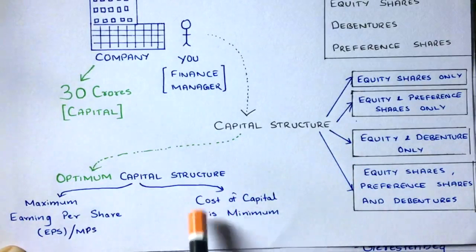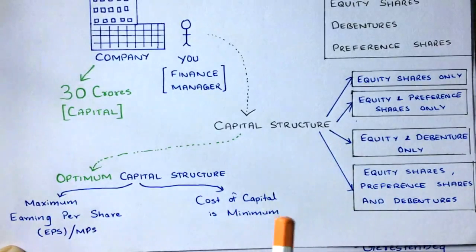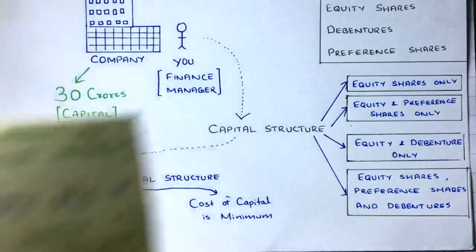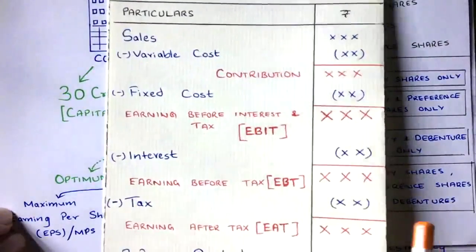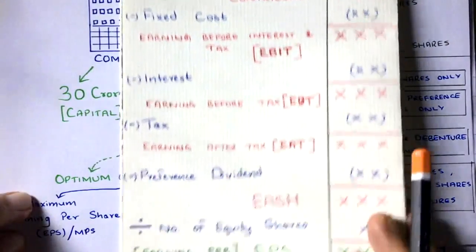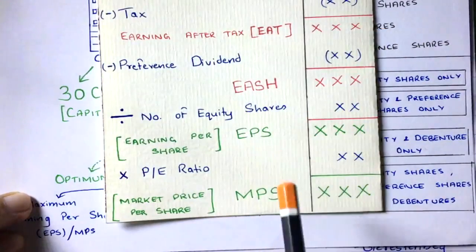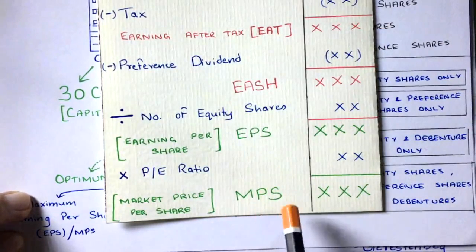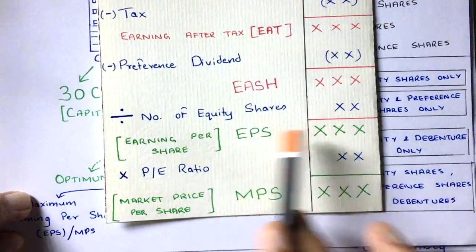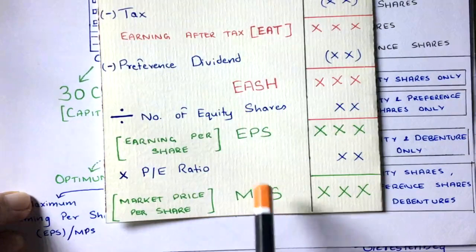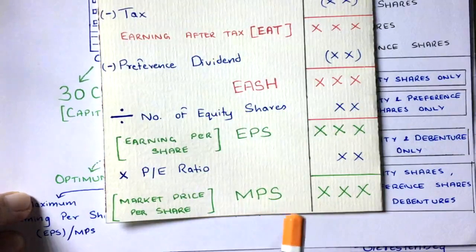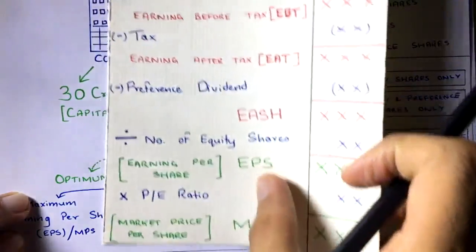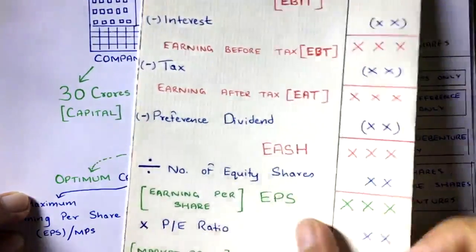The cost of capital analysis will be covered in the cost of capital chapter. Here in this chapter, we do EBIT EPS analysis to find the EPS. We calculate EPS and, if possible, MPS. But mostly in BCom, BBA, and BBM exams, you only have to calculate EPS — you don't have to calculate MPS. That's given just in case.